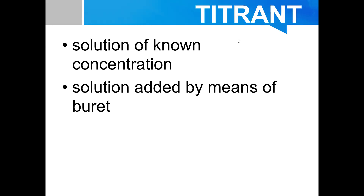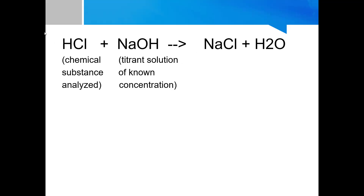The solution or chemical substance of known concentration is called the titrant. The titrant is the other chemical we will use to react with the analyte, and take note that its concentration is known. Most of the time, this is the solution added by means of a burette during the titration process. In our example, sodium hydroxide added through the burette is called the titrant.